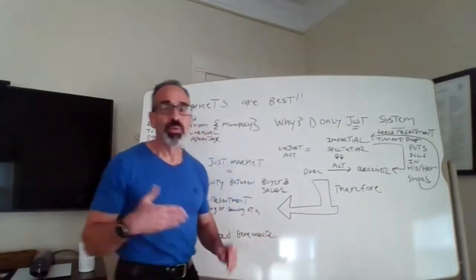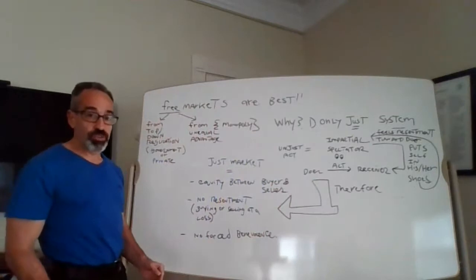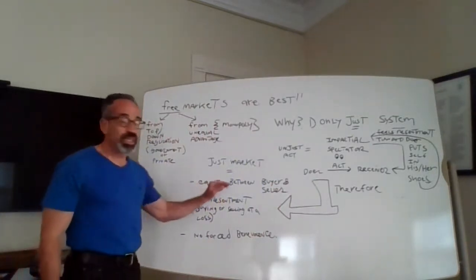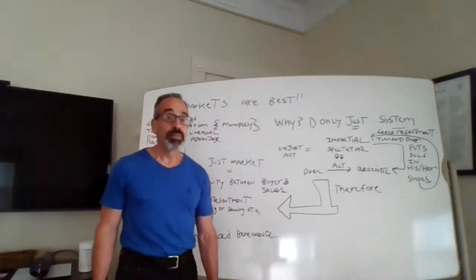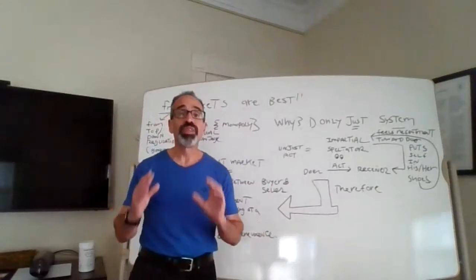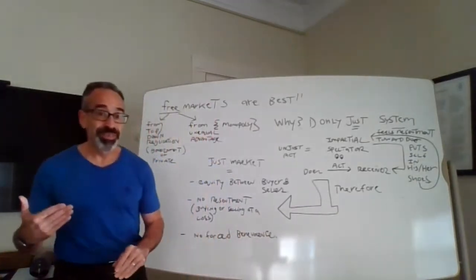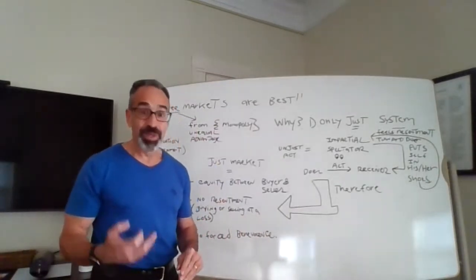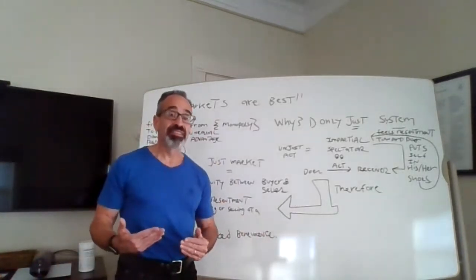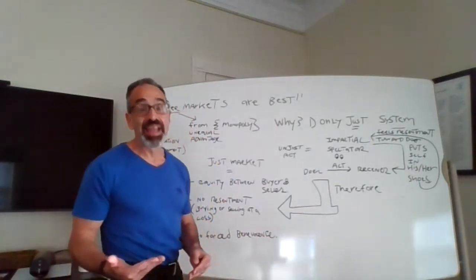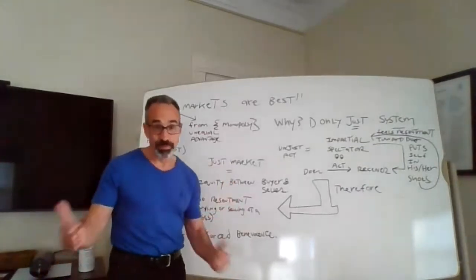So once we understand this, we understand what a just system would look like. A just market would have three characteristics. First, it would have equity or equality between buyers and sellers — meaning no one would feel resentment at the price they had to pay for a good they're buying, and no one would feel resentment at the price they received for what they're selling. Both parties would feel they are not suffering harm or loss based on how the transaction took place. There can't be favoring of one party over the other.